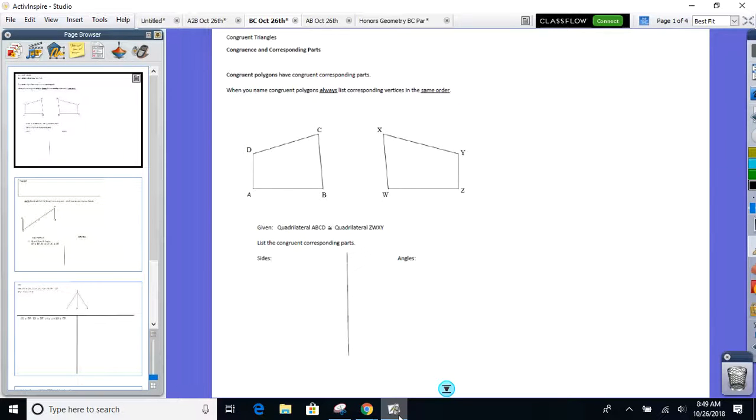We're going to start going back to this concept of being congruent. The only thing we've really talked about is segments being congruent and angles being congruent. Now, how can two polygons be congruent, specifically triangles by the end of today? How are two triangles congruent?